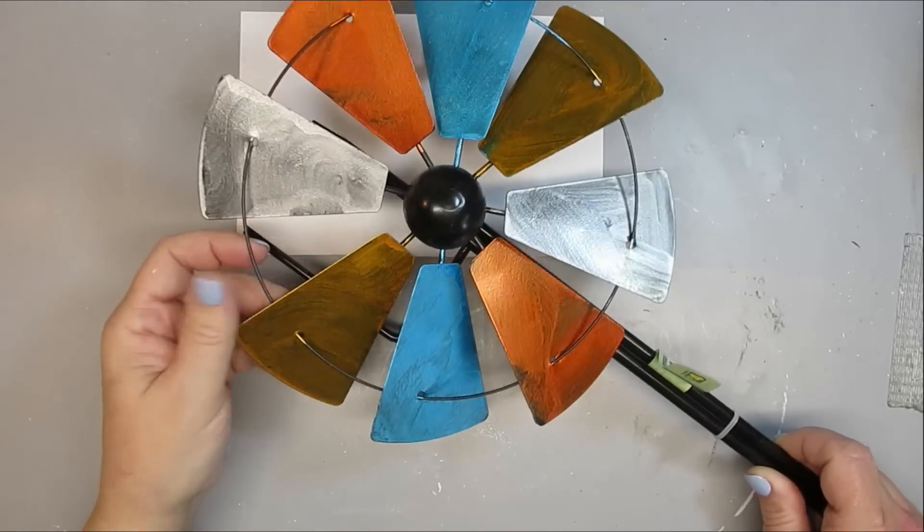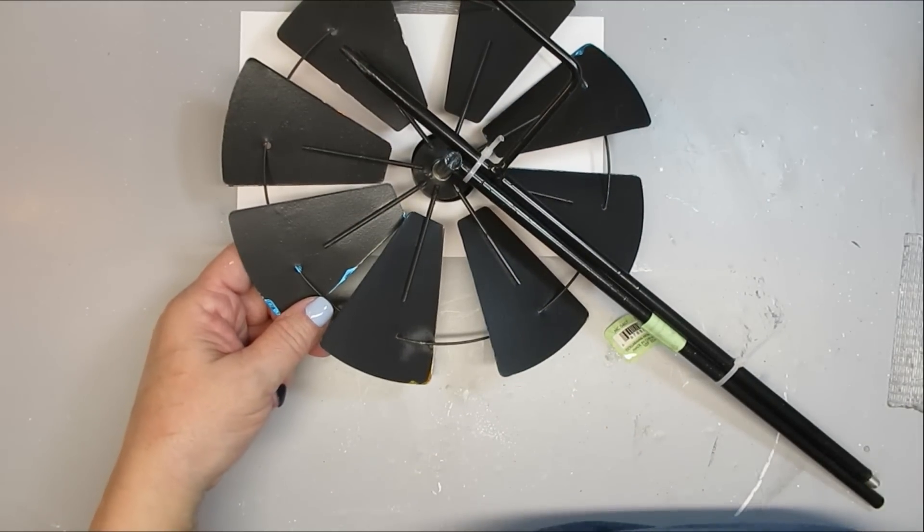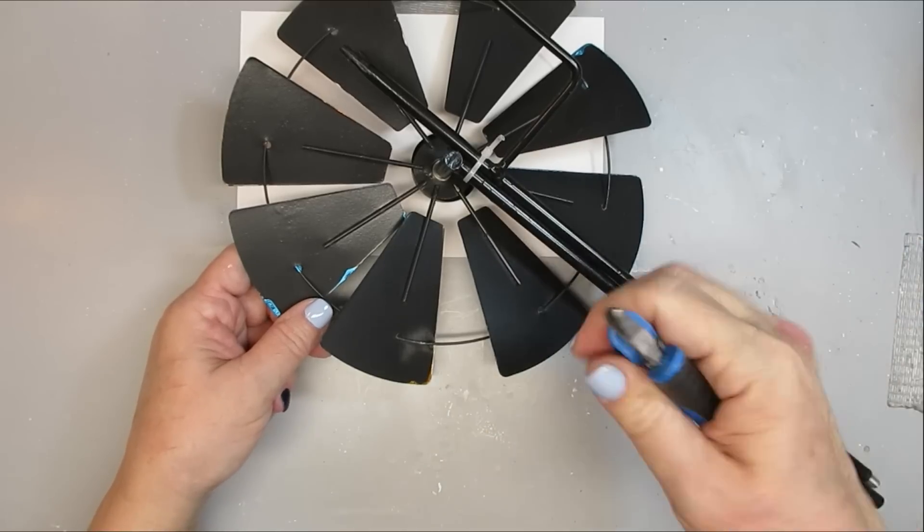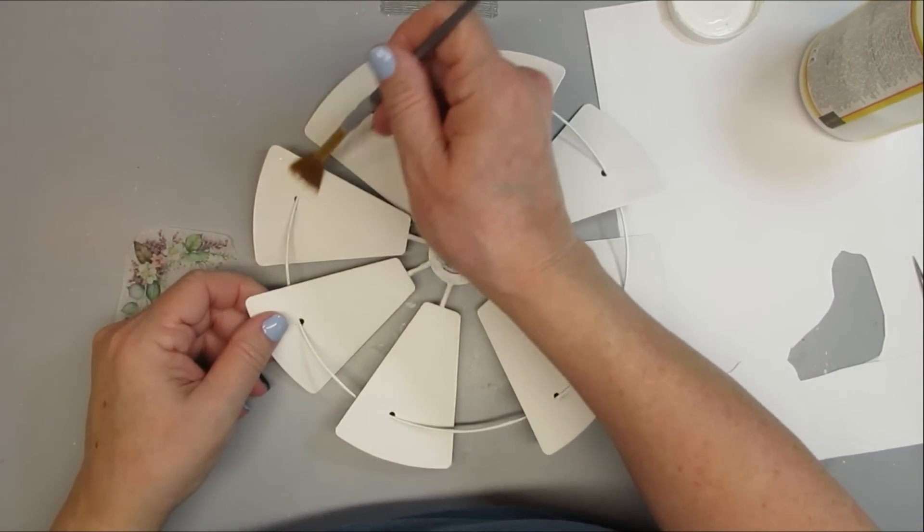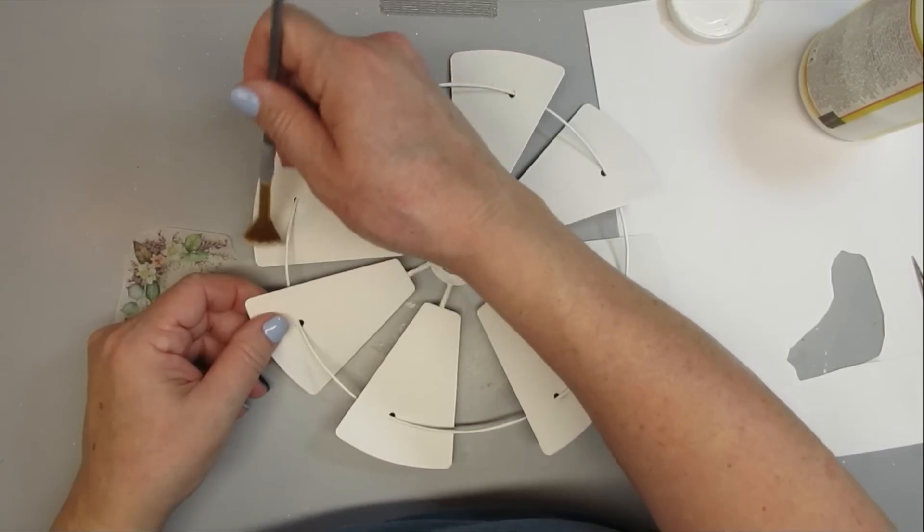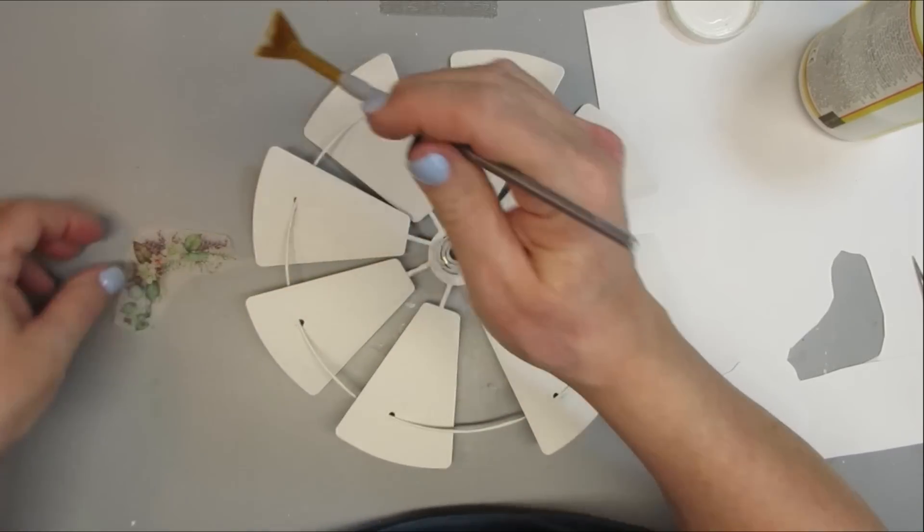If a windmill doesn't scream farmhouse, then I don't know what does. I'm going to just use the blades on this and not use any of the poles. To cover all of those bright colors, I gave it three coats of white chalk paint.